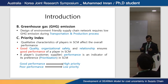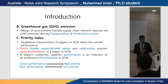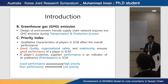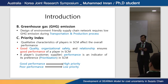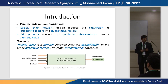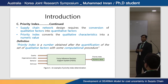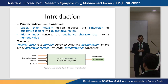Priority index: in addition to quantitative factors, there are qualitative characteristics of players which may affect the performance of the overall supply chain. For example, good quality, organizational safety, and relationships ensure good performance of a player within the supply chain. A player with good performance is highly preferred by other players, while poor performance indicates low priority. In order to use qualitative characteristics within the supply chain model, those qualitative factors have been converted to quantitative ones by introducing a priority index.